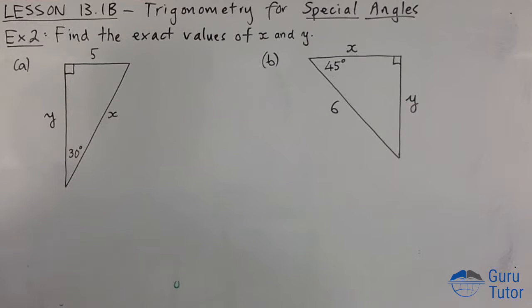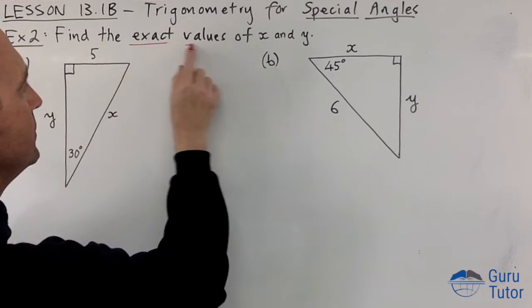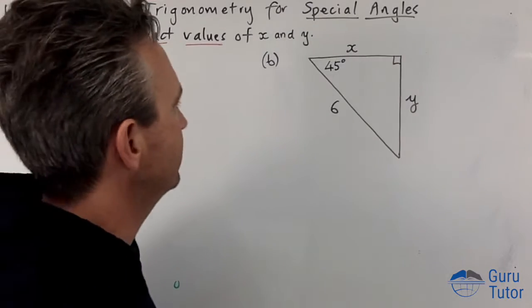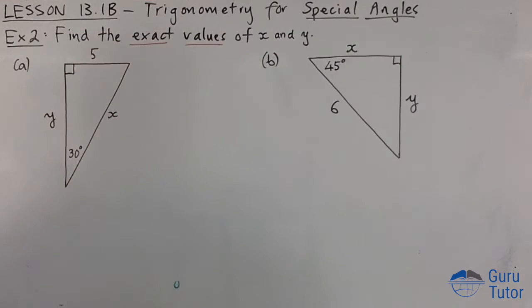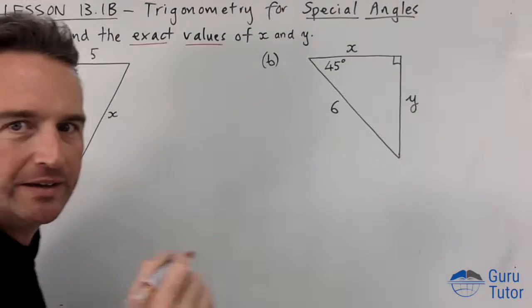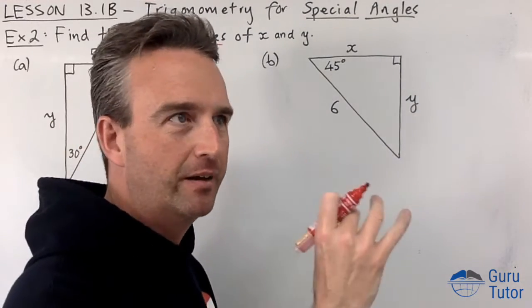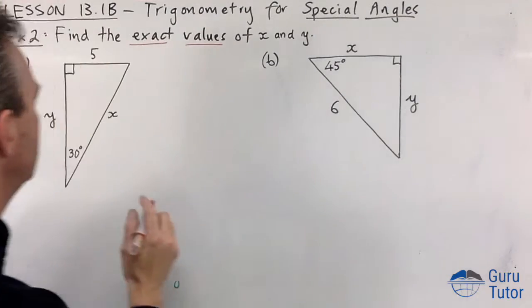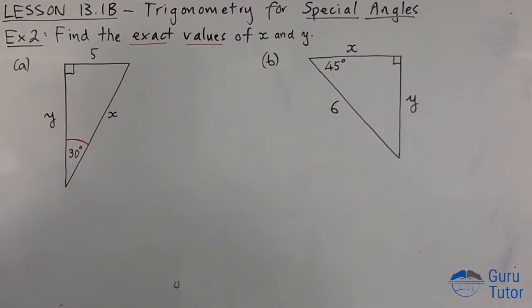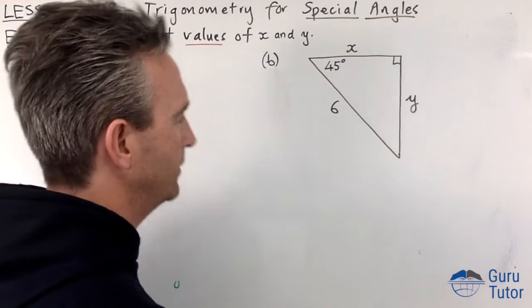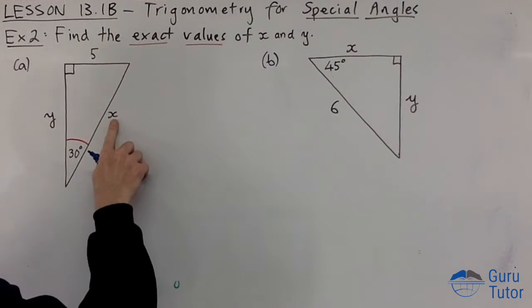We're going to find the exact values of x and y in each triangle using all those derived special angle values. We can only really find one at a time. Remember each time we make an equation we're going to have one unknown in it. So we have this angle 30 here. We're just going to make a choice which one do you want to find first.